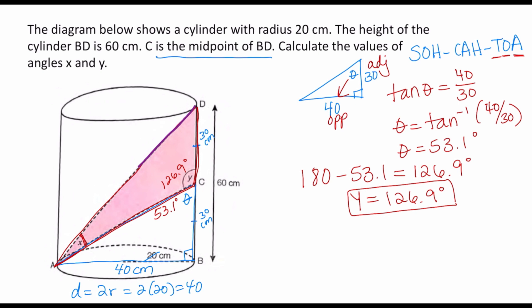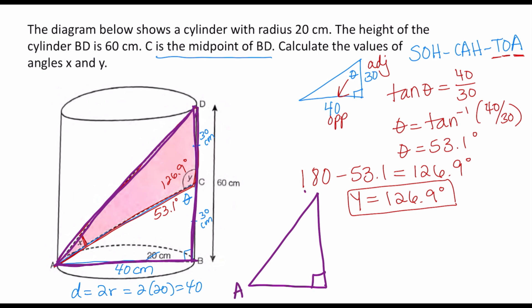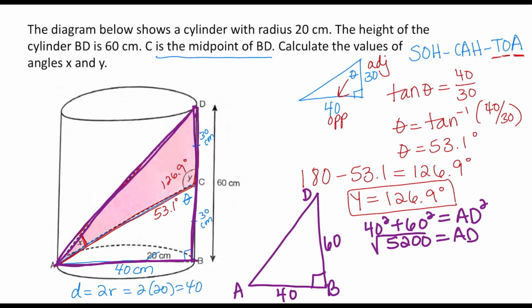I'll highlight the large triangle ADB in purple — A, D, and B — where BD is 60 centimeters, AB is 40, and it is a right triangle, so I can use the Pythagorean theorem. 40 squared plus 60 squared equals AD squared. 40 squared plus 60 squared gives 5,200. Taking the square root of 5,200 gives approximately 72.1. So AD is approximately 72.1 centimeters.